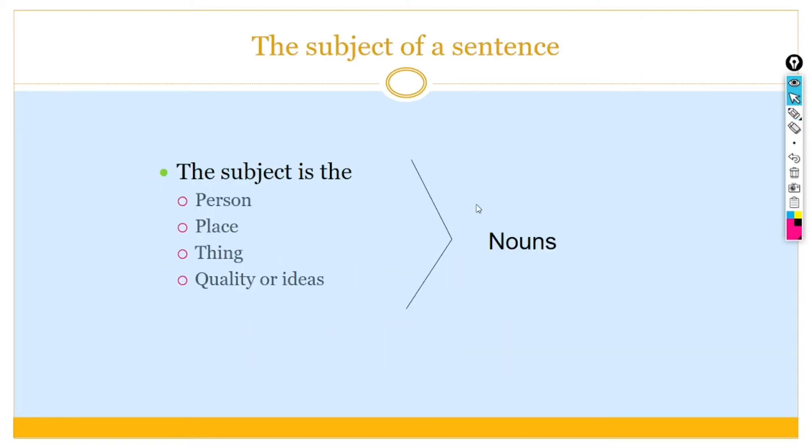So, subject of simple sentence may be a person, place, thing, quality, or ideas. And the subject is almost always a noun.